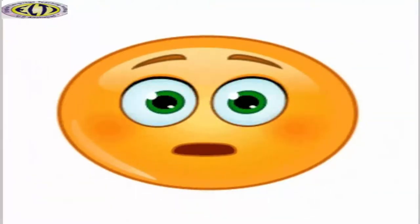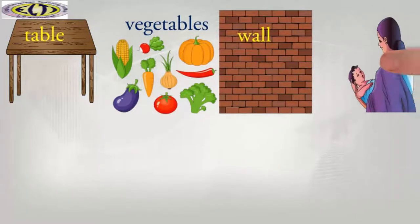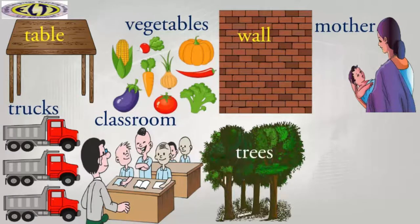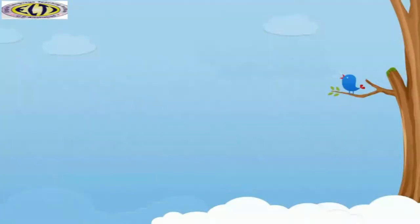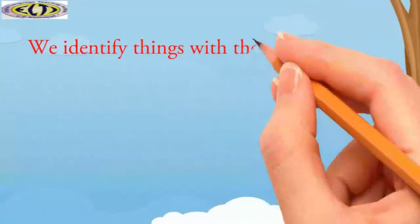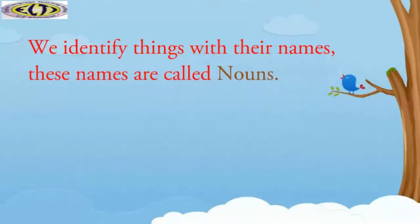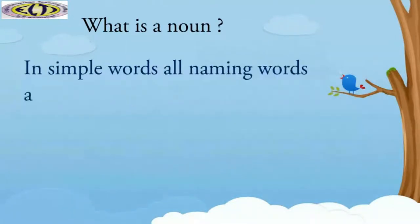When we look around, we see a number of things. Have you ever wondered how we identify these things? That's right — we identify things with their names. These names are called nouns. In simple words, all naming words are nouns.